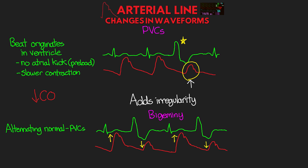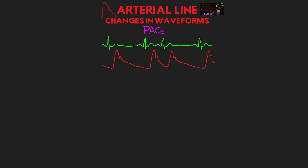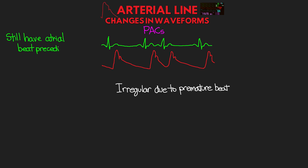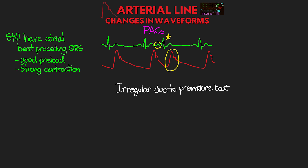The next abnormality is premature atrial contractions or PACs. With PACs, we'll also see irregularity due to this premature beat. Unlike PVCs though, we still have that atrial beat preceding the narrow QRS, meaning good preload and a quick strong contraction. We can see PACs originating from different parts of the atria, which can have some small impact on how well the atria contract, but for the most part this is not going to be noticeable in our pressure tracing. As you can see in the example here, we have the irregularity from the premature beat, yet we see no major difference in the arterial waveform.